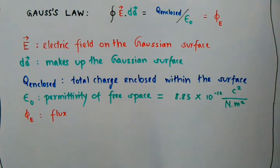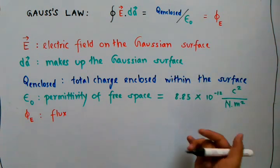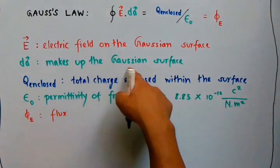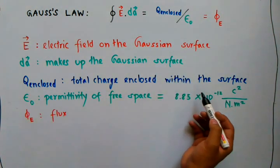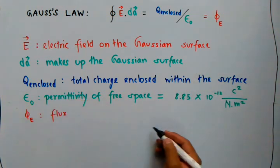It's an imaginary surface. Now dA is what makes up the Gaussian surface. Q_enclosed is the total charge enclosed within the surface.